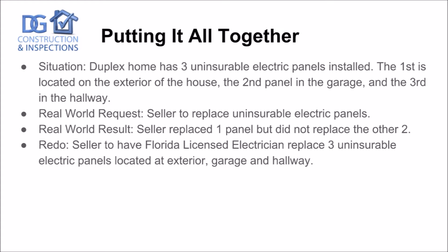Here's a real-world example of putting it all together. A duplex home has three uninsurable electric panels installed: the first on the exterior of the house, the second in the garage, and the third in the hallway. The real-world repair addendum request read: 'Seller to replace uninsurable electric panels.' The real-world result: the seller replaced one panel and did not replace the other two.